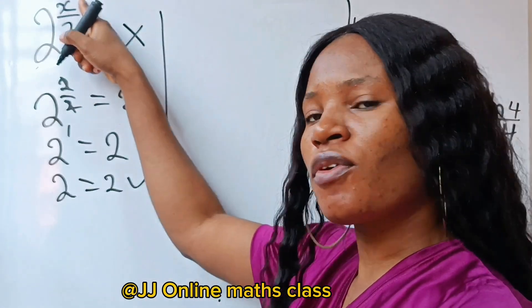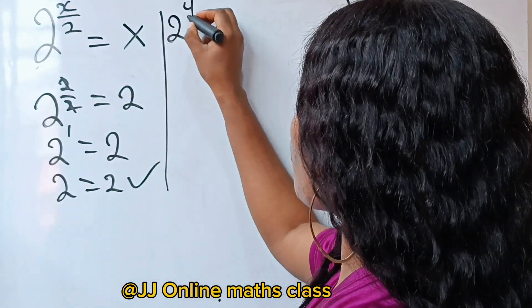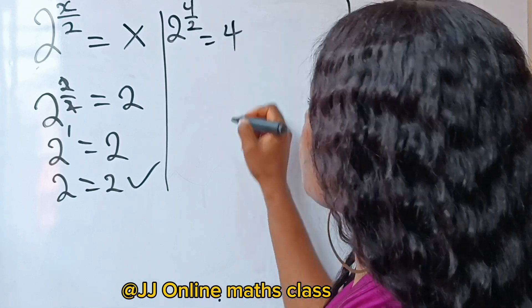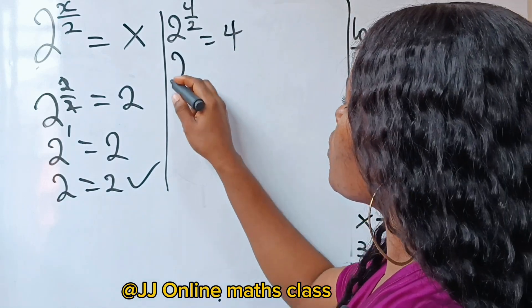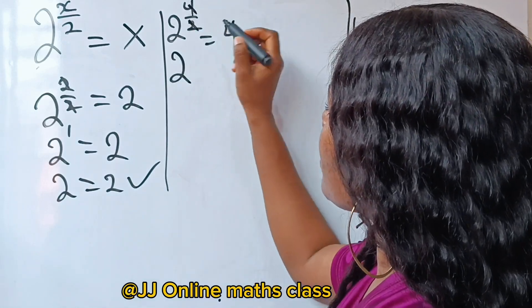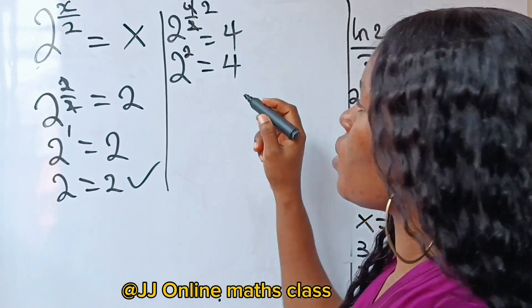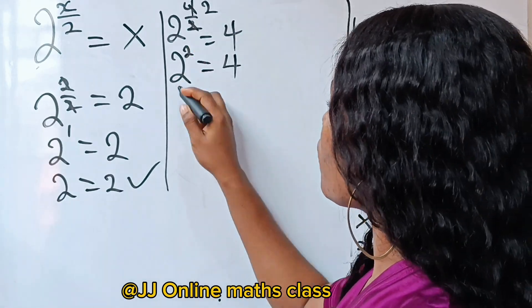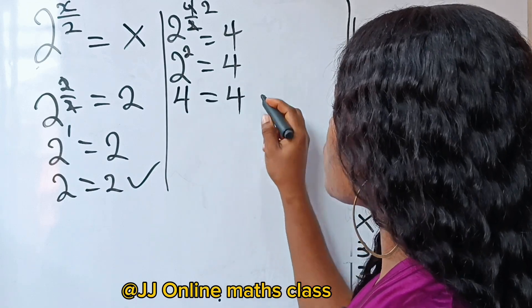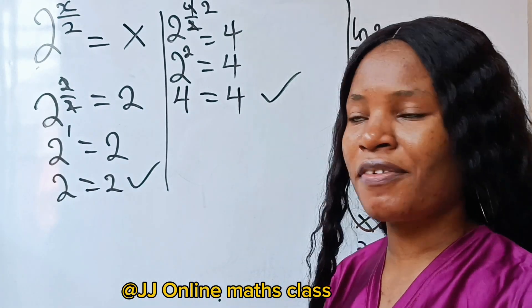Now, what if we substitute our x as 4? We are going to have 2 to the power of 4 over 2 is equal to 4. So we have 2 to the power of, if 2 divides 4, we are going to have 2. So 2 to the power of 2 is 4. And 2 to the power of 2 is 4, is equal to 4. So this also satisfies the equation.